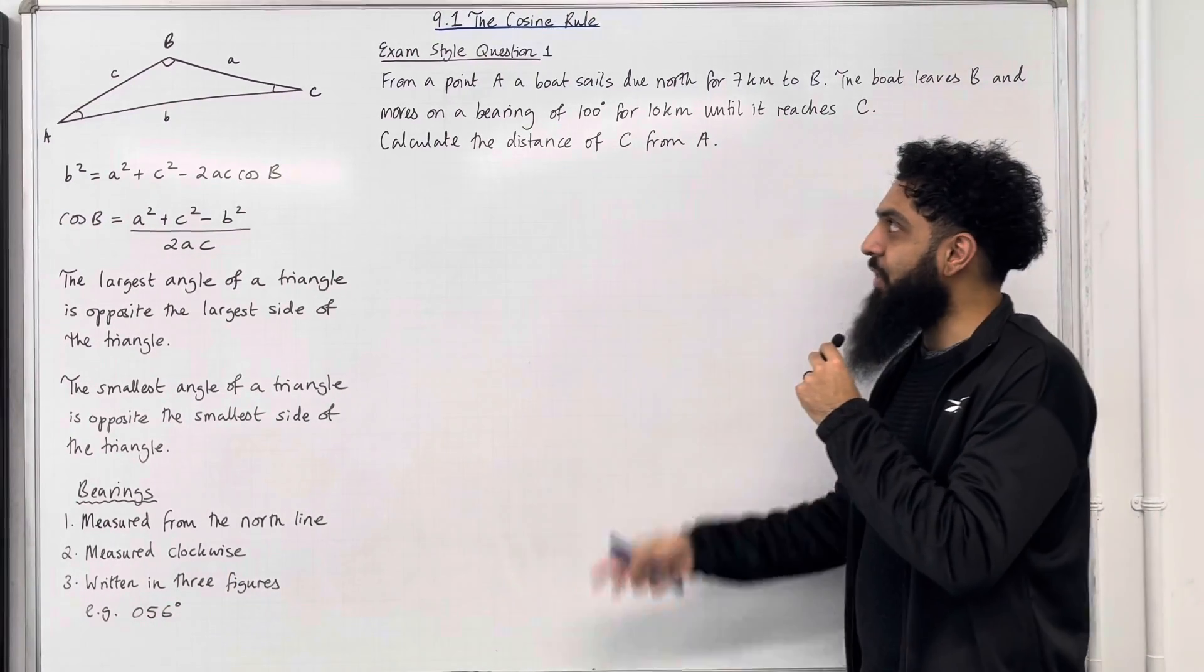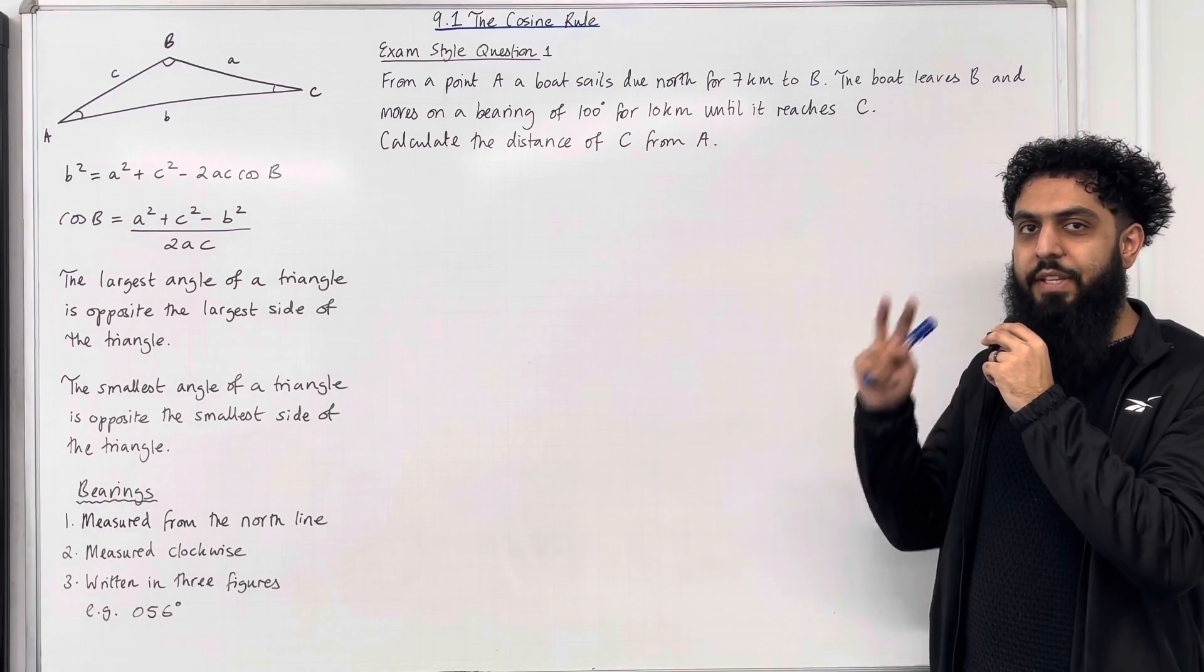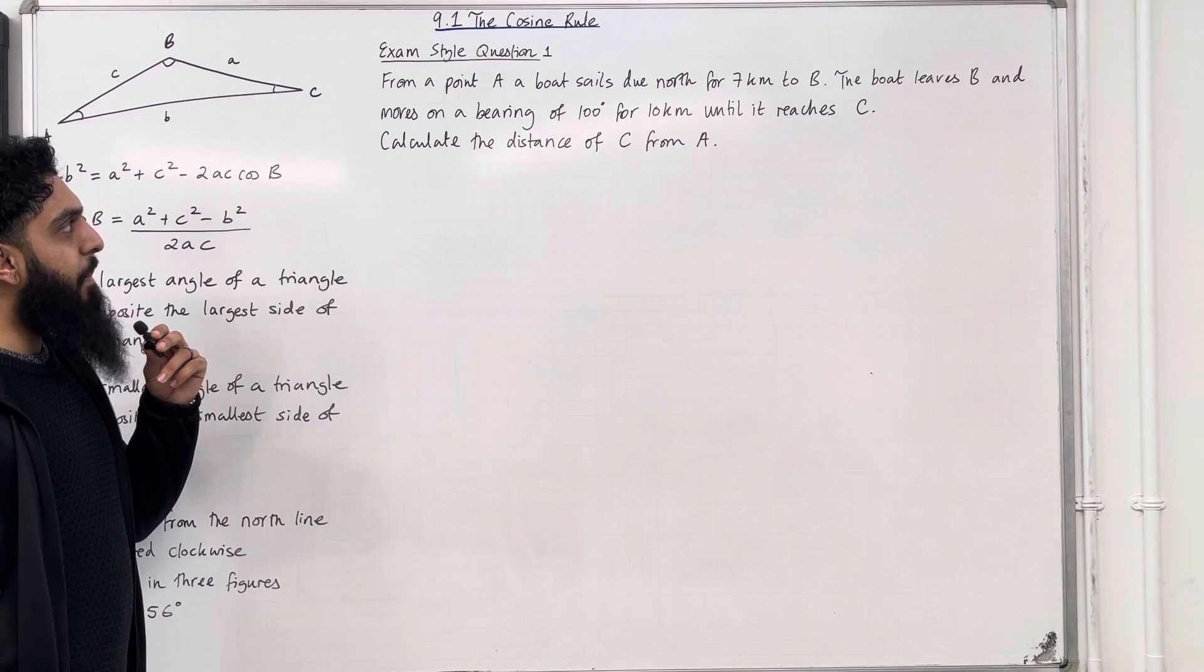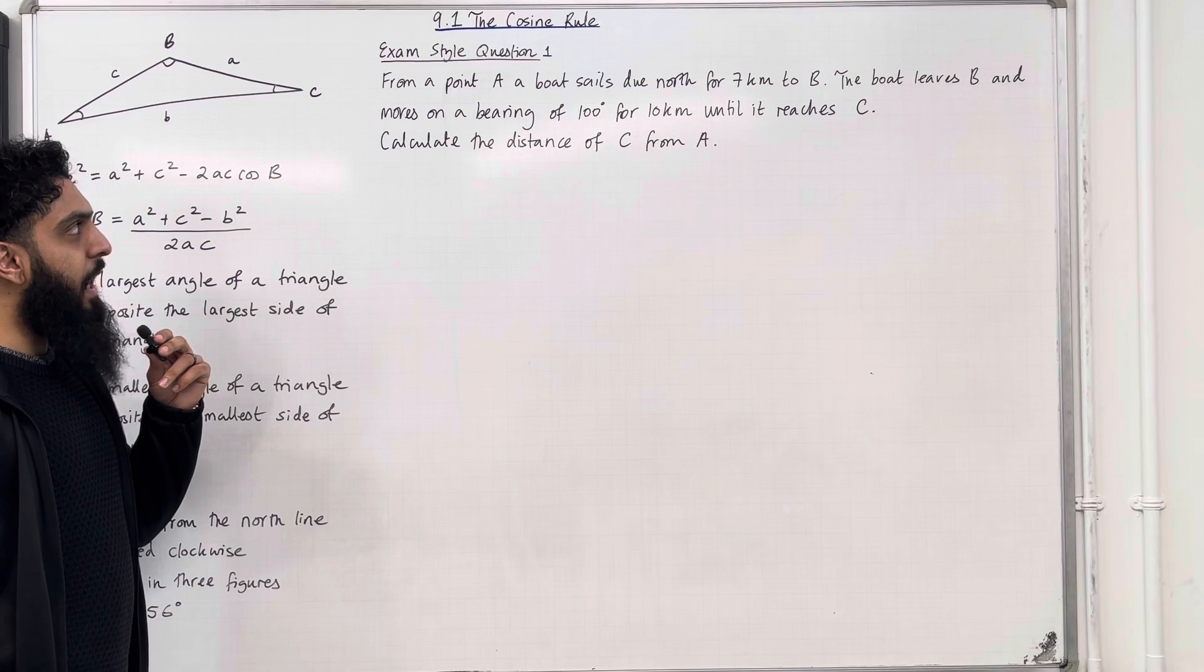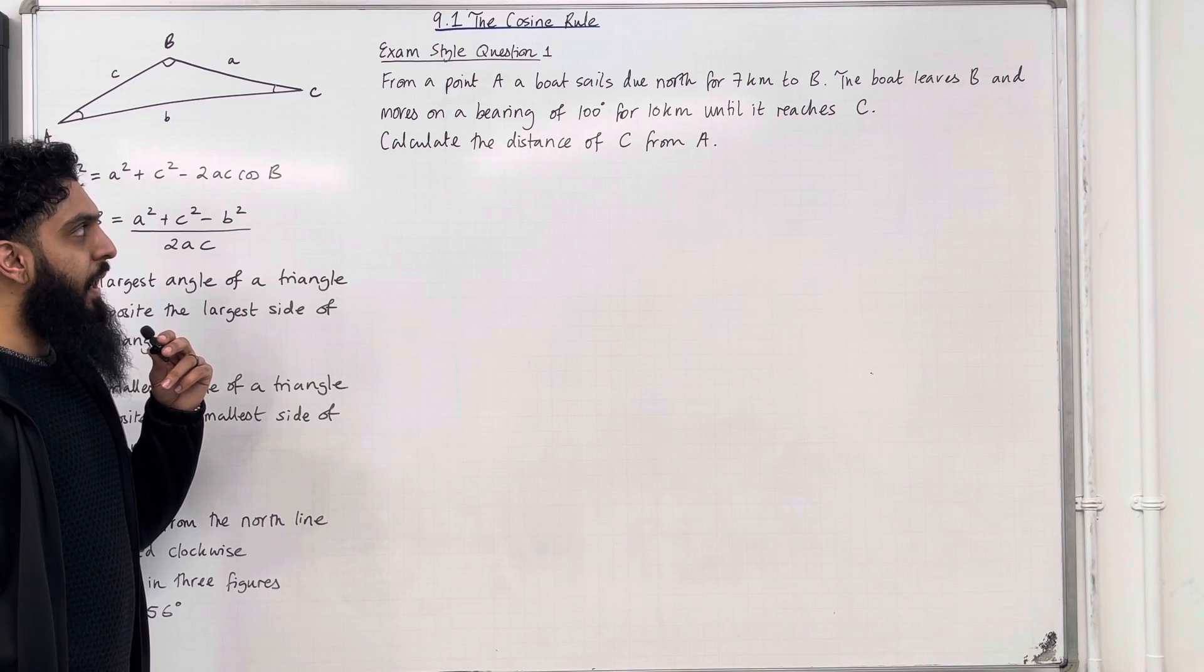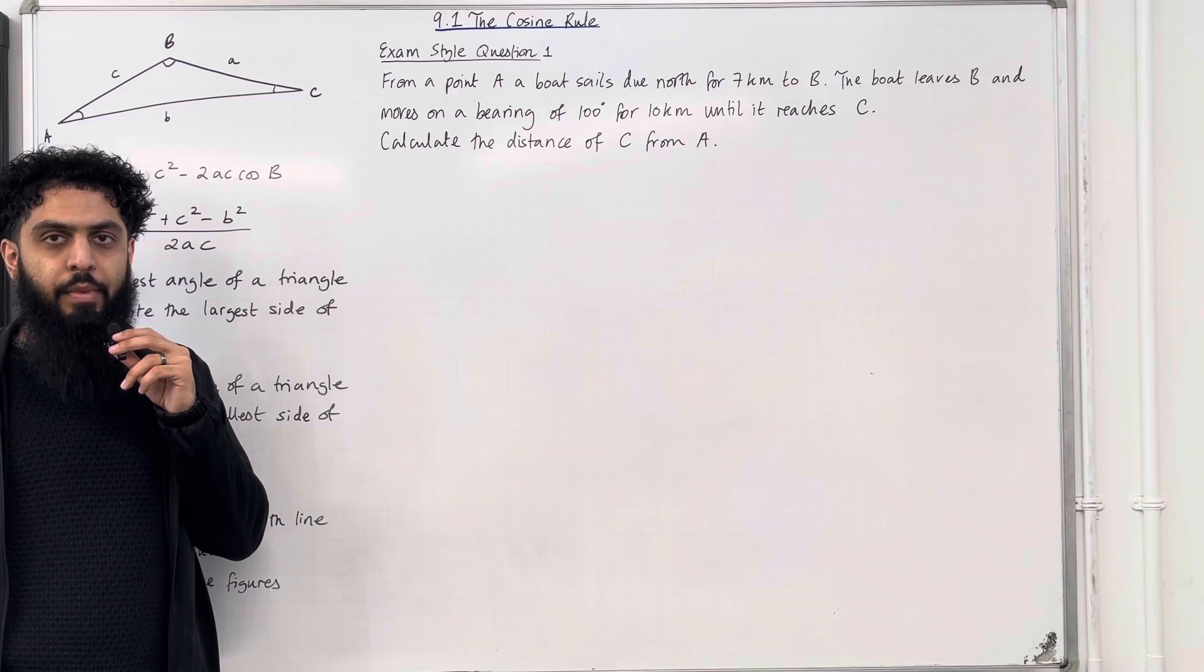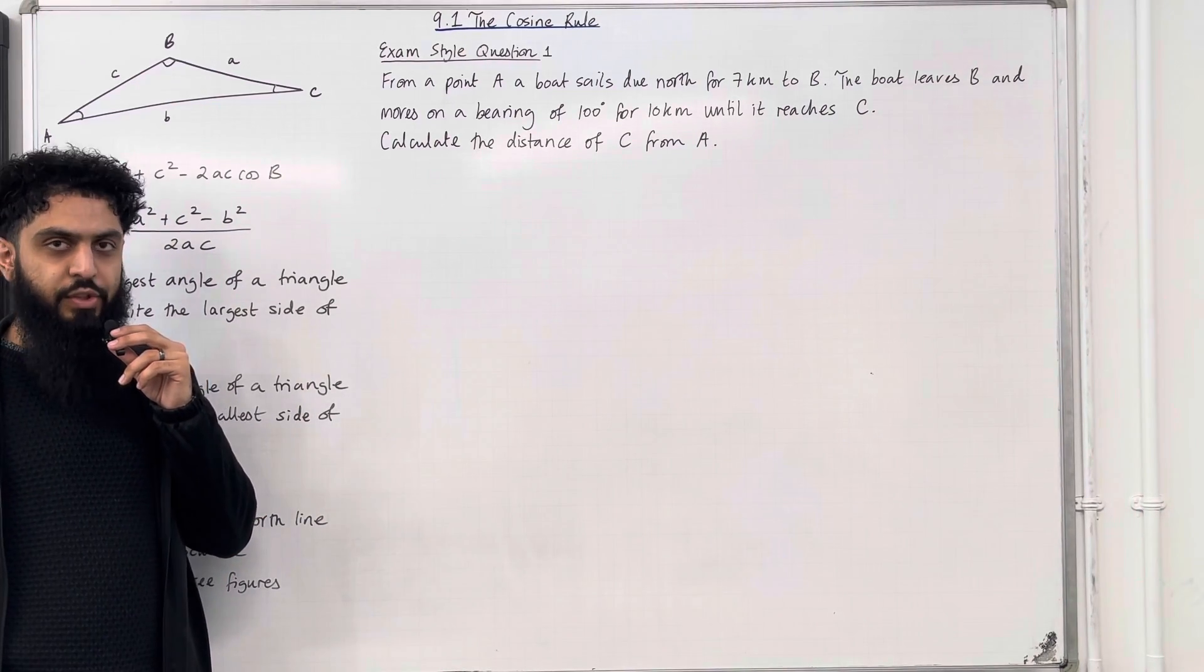These are the key facts of 9.1 the cosine rule. I'll be implementing these key facts within two exam style questions. Let's have a look at exam style question 1. From a point A, a boat sails due north for 7km to B. The boat leaves B and moves on a bearing of 100 degrees for 10km until it reaches C. Calculate the distance of C from A. Now for these type of questions, it is particularly useful to draw a diagram.